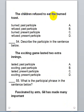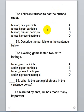Number 53: 'The children refused to eat the burned toast.' The participle here is 'burned,' and it is a past participle ending in -ed. So we're going to choose A.